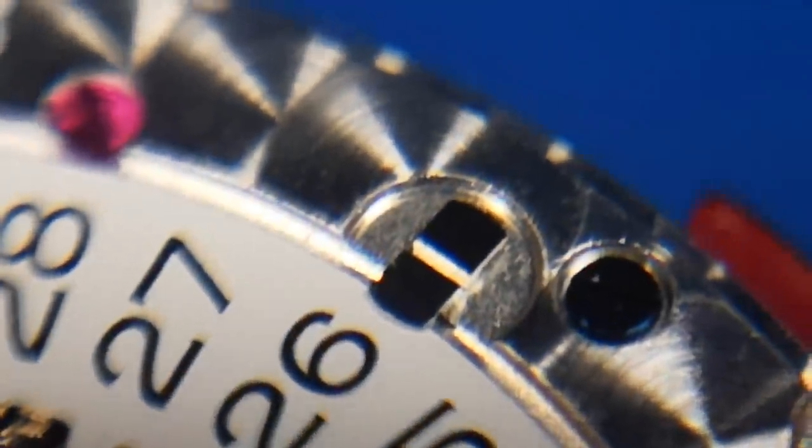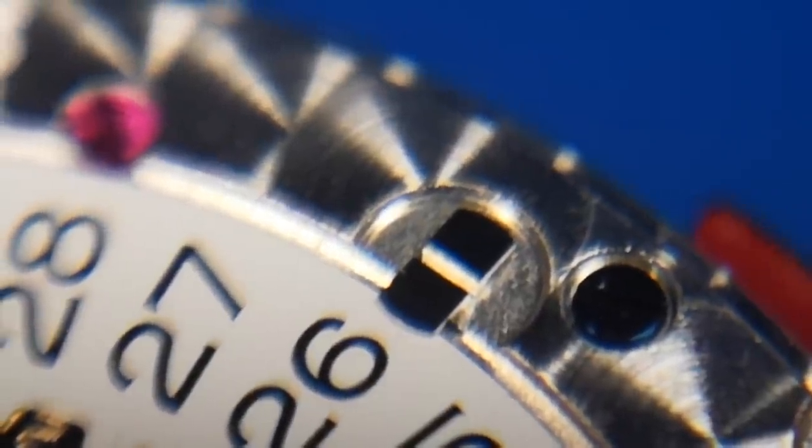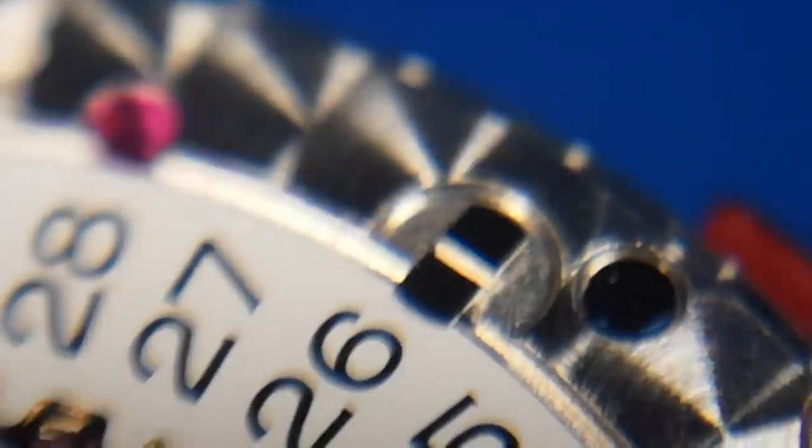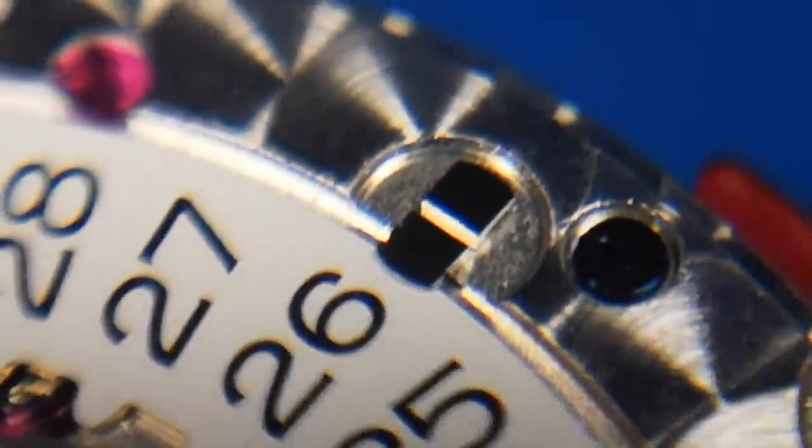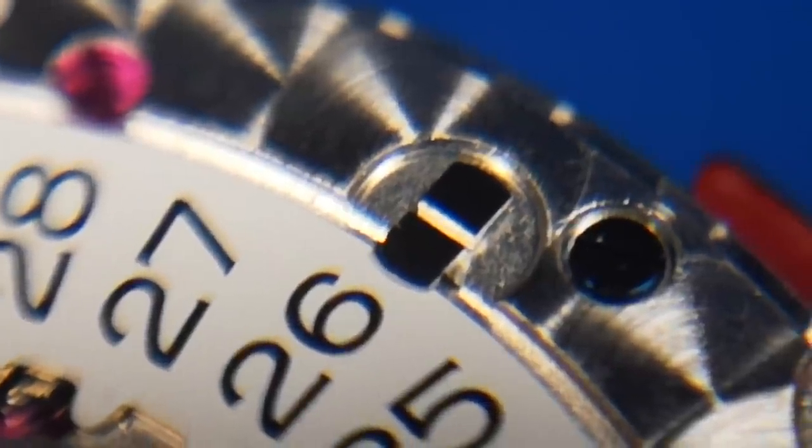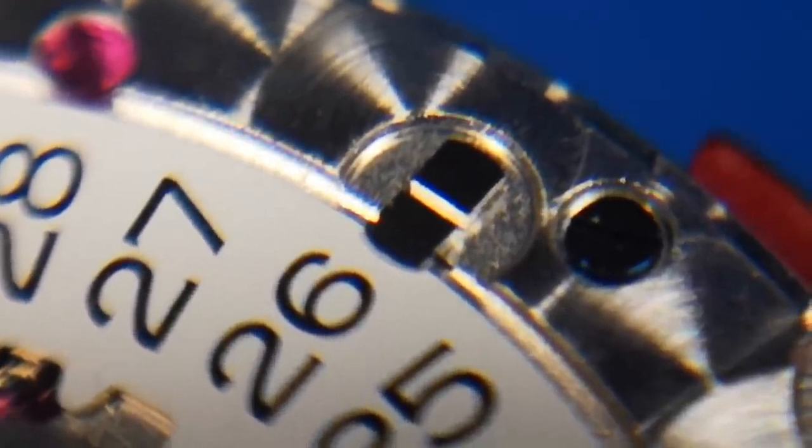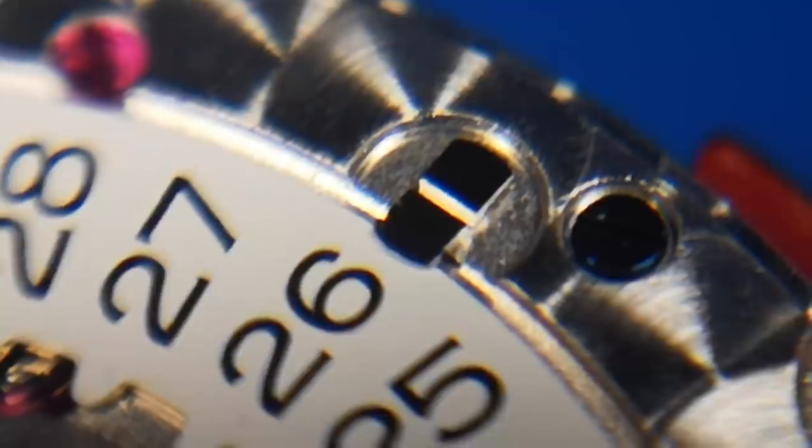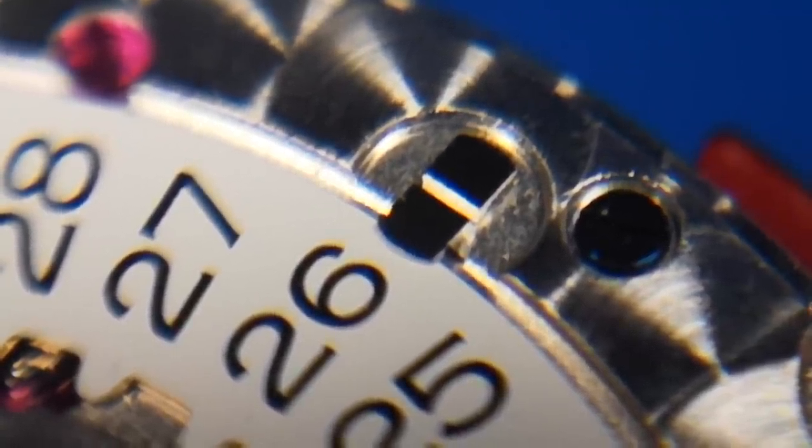That retaining clip right there - you just turn that through 90 degrees and that holds it loosely in place because it has to be free to move. So I've tested the operation of that, so we can now flip the movement over and put in the pallet fork and the balance and get the watch going again.